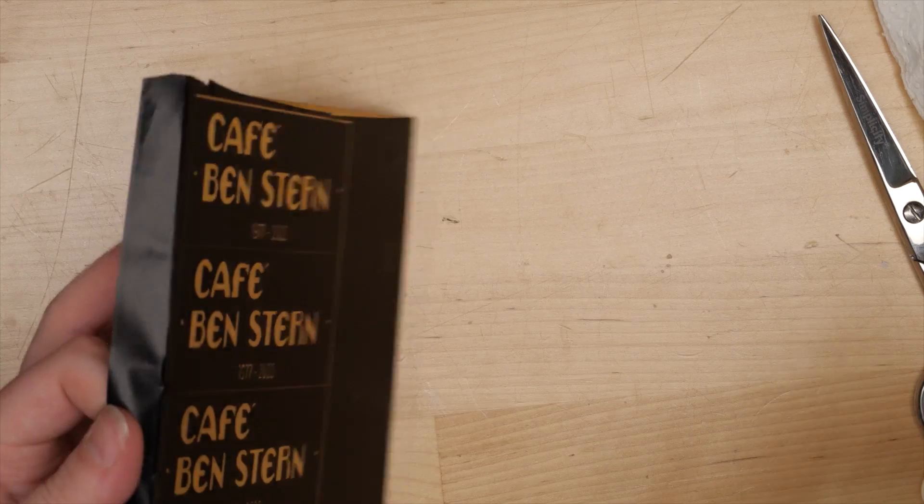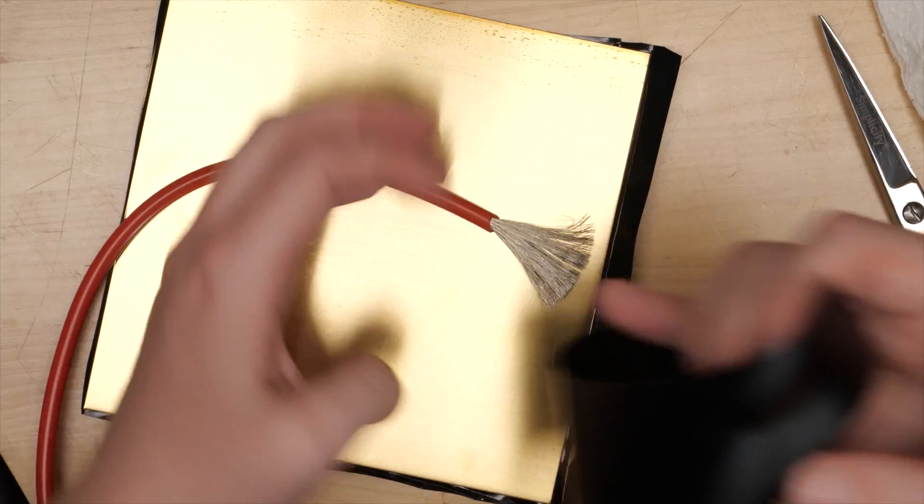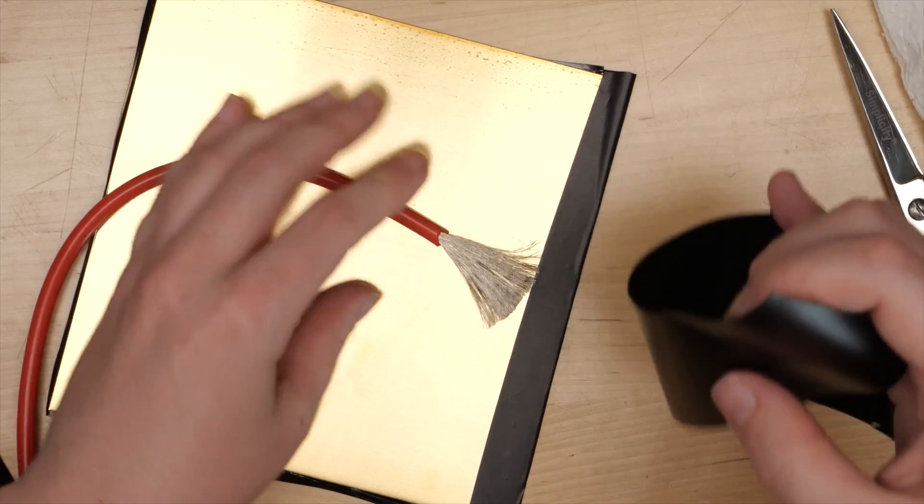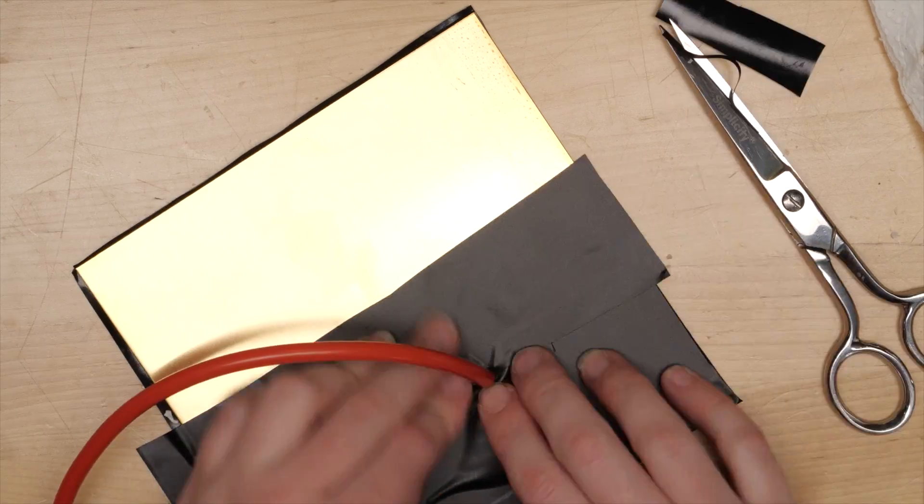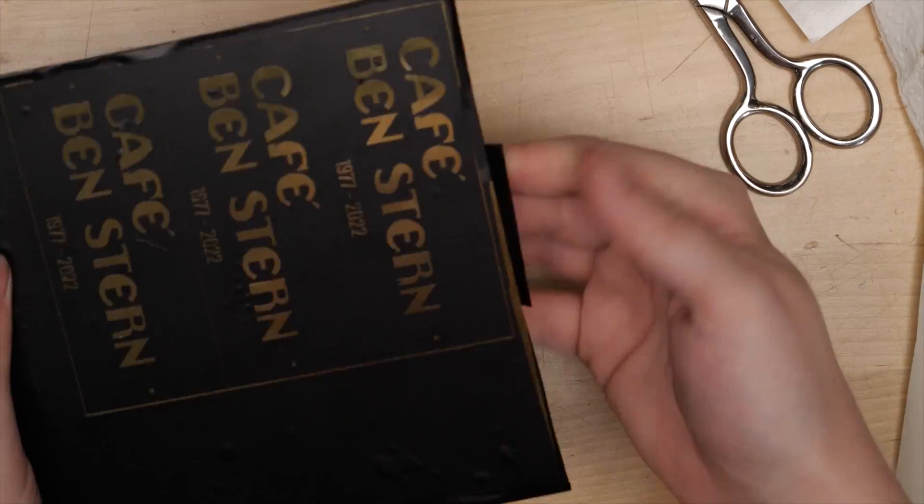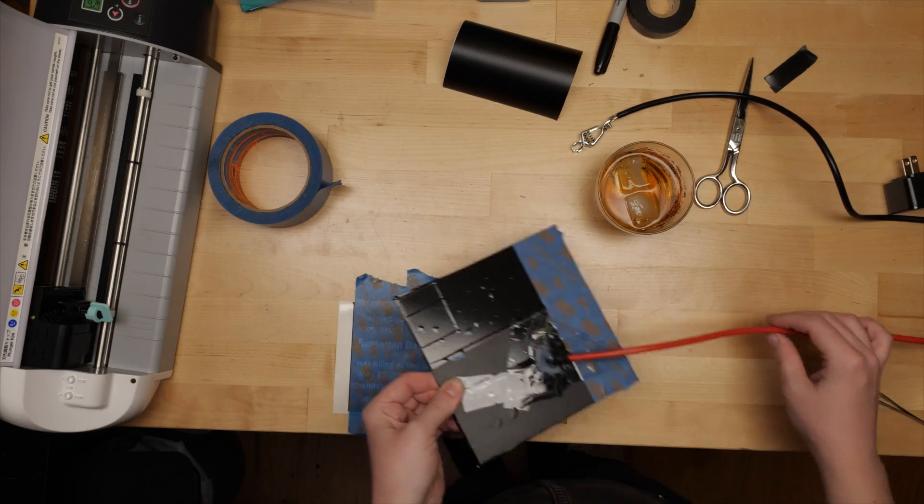On the back, I taped the positive wire to the center of the area to be etched so that the wire makes good contact with the metal, and covered the entire back of the metal in more sticky vinyl. You can use tape for this, just be sure it's waterproof. Painter's tape is not.